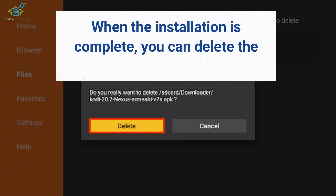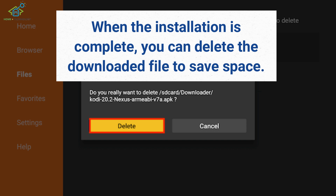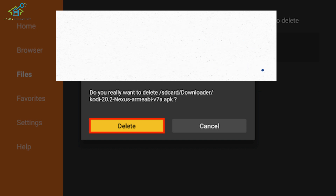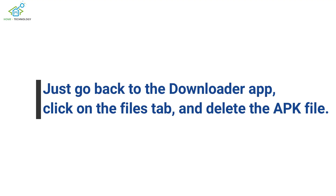When the installation is complete, you can delete the downloaded file to save space. Just go back to the Downloader app, click on the Files tab, and delete the APK file.